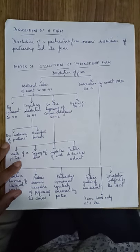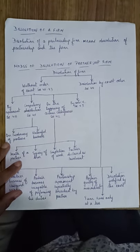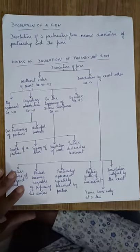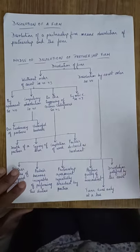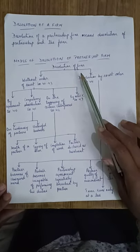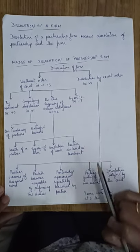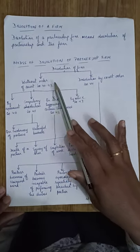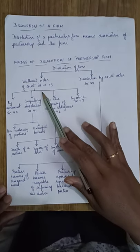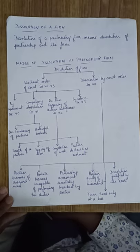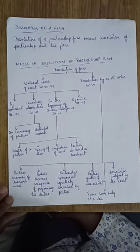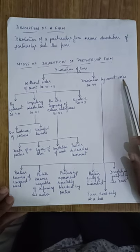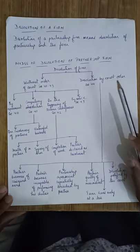Now let's look at what we mean by dissolution of a firm — it means dissolution of both the partnership and the firm. The circumstances under which a firm can be dissolved, as shown in the flowchart, fall into two categories: dissolution without the order of court under Sections 40 to 43 of the Indian Partnership Act of 1932, and dissolution by court order under Section 44.